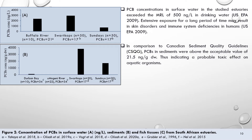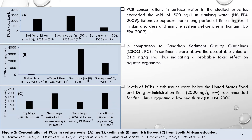This is another graph showing the concentration of PCBs in sediment from South African estuaries. Levels in sediment of Swartkops were higher than those reported for Sundays, Durban Bay and Umgeni River. In comparison to Canadian sediment quality guidelines, PCBs in sediment were above the acceptable value of 21.5 ng per gram dry weight, indicating a probable toxic effect on aquatic organisms. A third graph shows PCBs in fish tissues from South African estuaries — levels were below the US FDA limit of 2,000 ng per gram wet weight, suggesting a low health risk when these fish species are consumed.